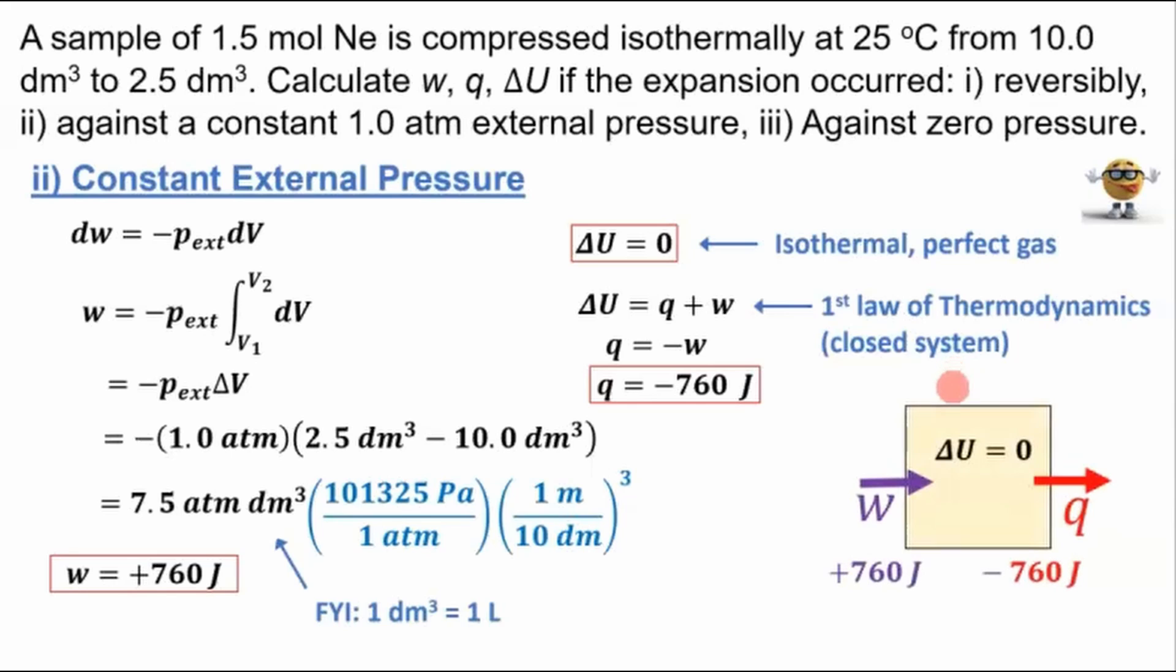So the system loses, because it's negative, 760 joules of energy as heat. What this looks like, just like before, the change in internal energy of the system is zero. We have 760 joules of energy as work going into the system and 760 joules of energy as heat leaving the system. So there's no change in internal energy in the system.